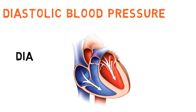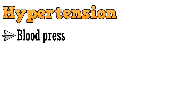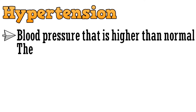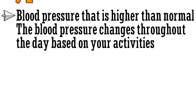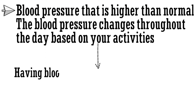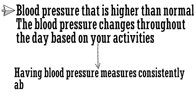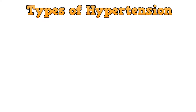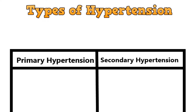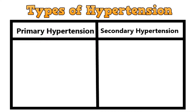Now that we have understood the basic terms, let's discuss about hypertension. Hypertension is the blood pressure that is higher than normal. The blood pressure changes throughout the day based on your activities. Having blood pressure measures consistently above normal may result in a diagnosis of hypertension. There are two types of hypertension: primary or essential, and secondary hypertension.